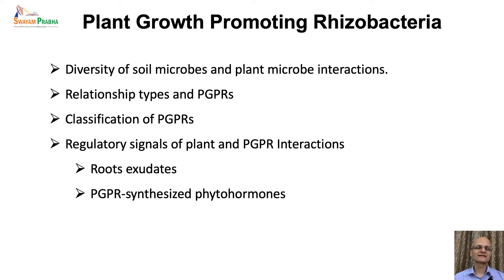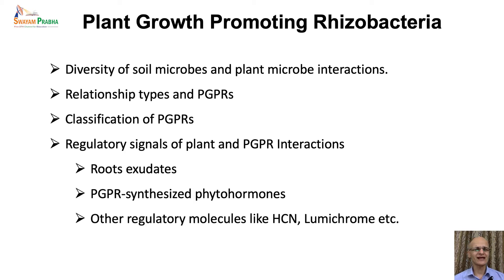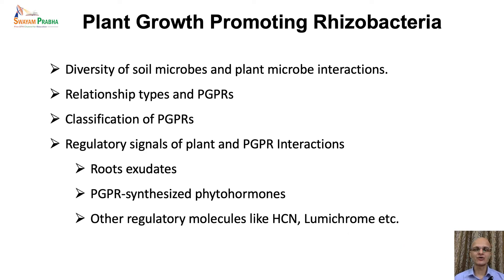PGPRs synthesize phytohormones that can manipulate the hormonal valence of the plants and affect plant growth and development. PGPRs also synthesize other regulatory molecules like hydrogen cyanide or lumichrome, etc., that affect either plant growth or the proliferation of other members in the rhizosphere.